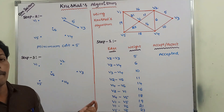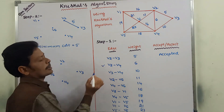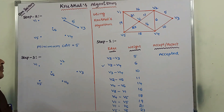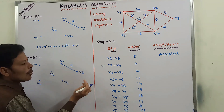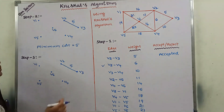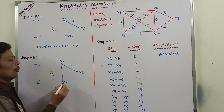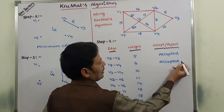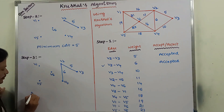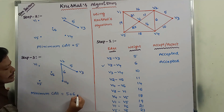Next, what is the next minimum edge weight? That is 6 — edge V2 to V4. This can be added to the spanning tree without forming a cycle. By adding this edge, is any cycle formed? No. So this edge is also accepted. After adding this edge, the minimum cost is equal to 5 plus 6, which is 11.